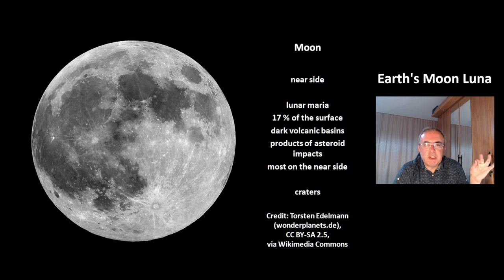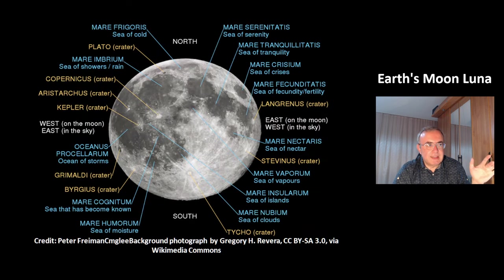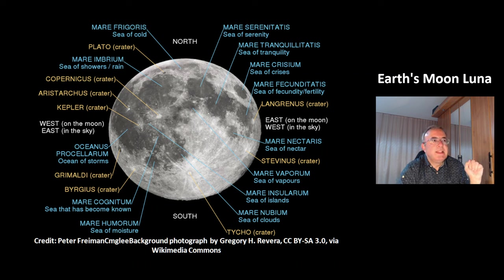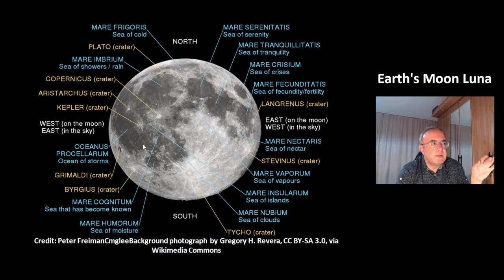The second feature of the Moon are the craters. This is a map with some of the areas of the Moon — for example, Mare Tranquillitatis (Sea of Tranquility), Mare Serenitatis (Sea of Serenity), and the large Oceanus Procellarum (Ocean of Storms), as well as Crater Tycho.